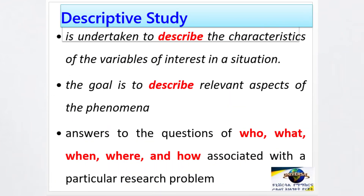The other research type is descriptive research. As stated earlier, descriptive research is proposed to describe a given phenomenon as it is. Descriptive research is undertaken to describe the characteristics of variables of interest in a situation. The goal is to describe relevant aspects of the phenomenon and to answer WH questions — who, what, when, where, and how.